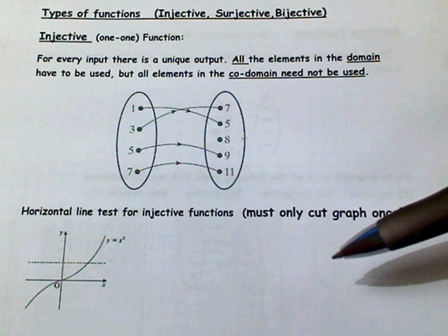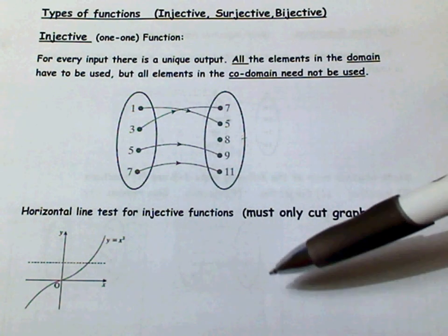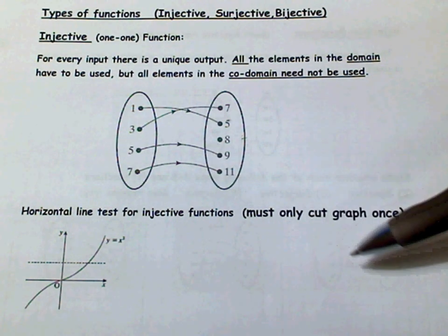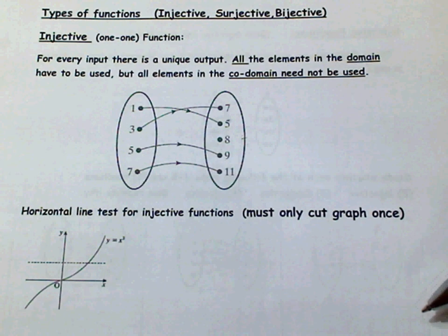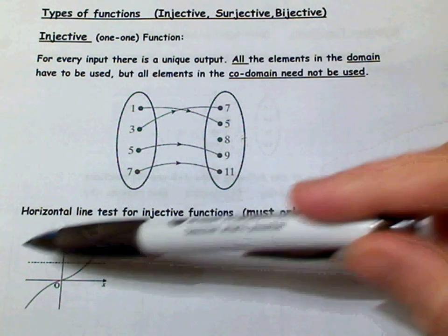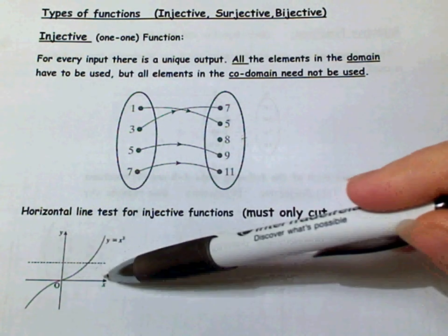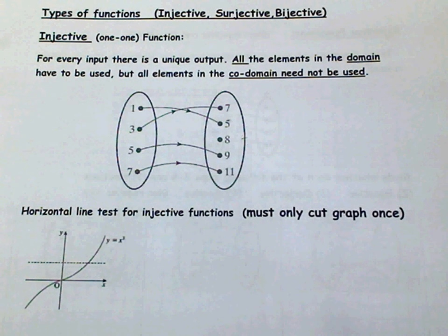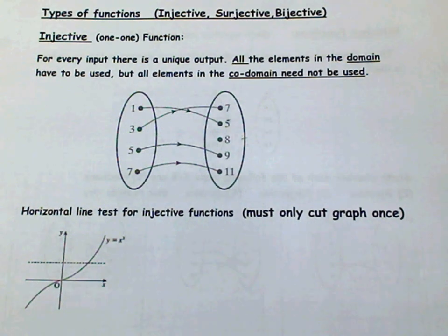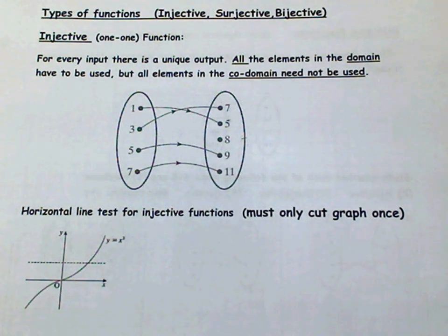A test for an injective function is if you draw a horizontal line across through the graph. For an injective function, the horizontal line can only cut the graph once.